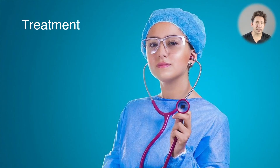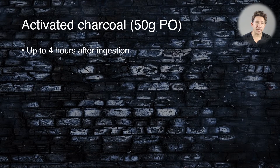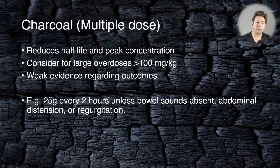The treatment for phenytoin overdose is largely supportive. It is worth thinking about activated charcoal. You can give a single dose of 50 grams orally any time up to four hours after ingestion. You might also want to think about multiple dose activated charcoal — for example, 25 grams every two hours. This has been shown to reduce the half-life of phenytoin and also reduce the peak concentrations achieved.